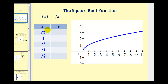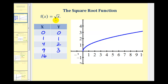When x is zero, y is equal to the square root of zero, or zero. When x is equal to one, y is equal to the square root of one, which is one. When x is four, y is equal to the square root of four, or two. When x is nine, y is equal to the square root of nine, or three. And when x is 16, y is equal to the square root of 16, or four.